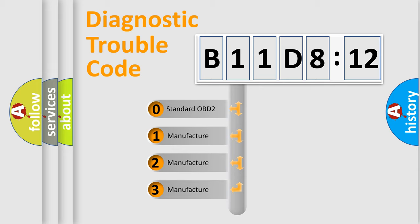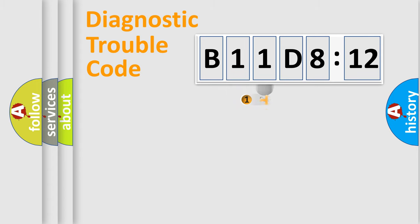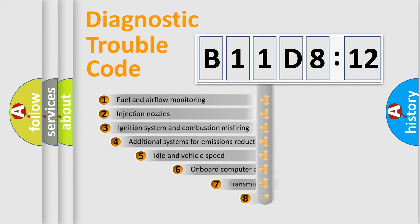If the second character is expressed as zero, it is a standardized error. In the case of numbers 1, 2, or 3, it is a manufacturer-specific expression of the car-specific error.